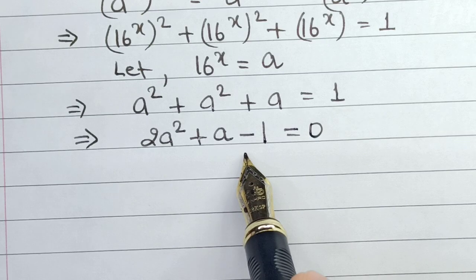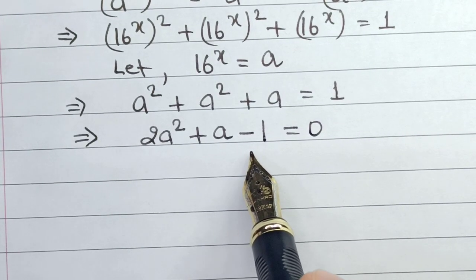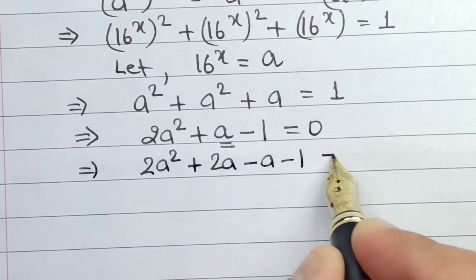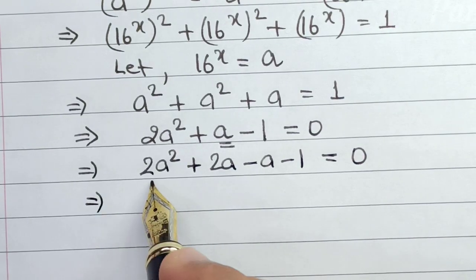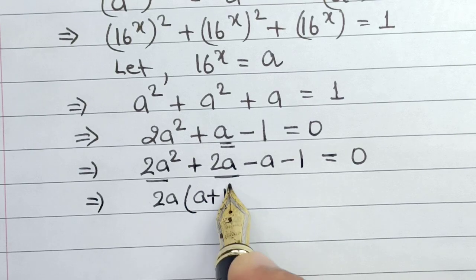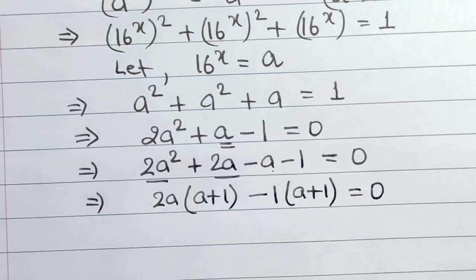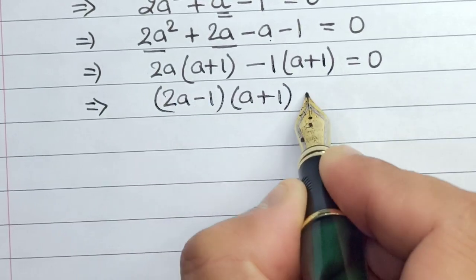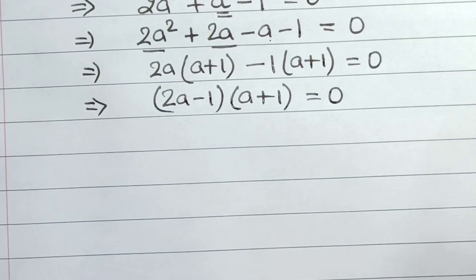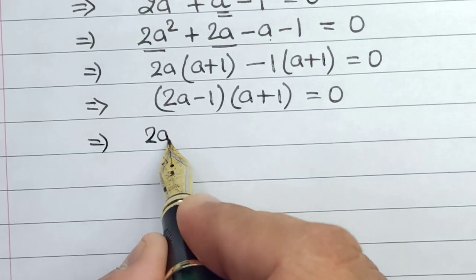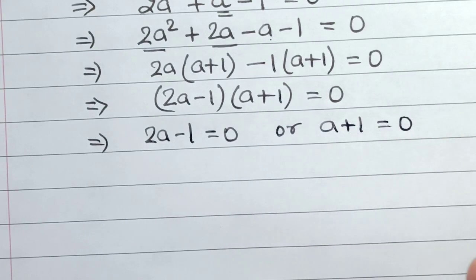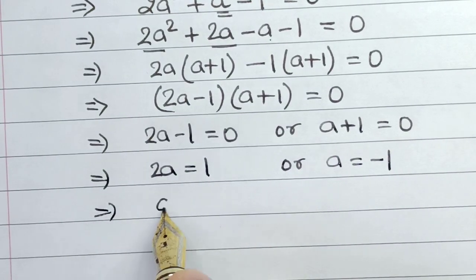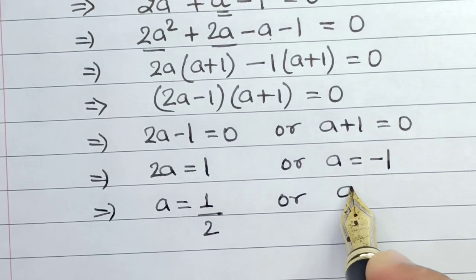Now all we have to do is find the value of a from this equation and then make the necessary changes to find x. Let's use the splitting by middle term method. The middle term a can be written as 2a minus a. So we get 2a squared plus 2a minus a minus 1 equals 0. From the first part I can take 2a common, giving a plus 1; from the second part I take minus 1 common, also giving a plus 1. This implies 2a minus 1 into a plus 1 equals 0. So either 2a minus 1 equals 0 or a plus 1 equals 0, giving a equals 1 by 2 or a equals minus 1.